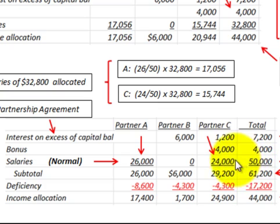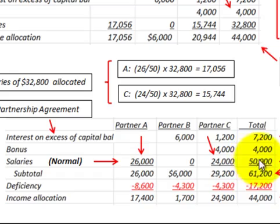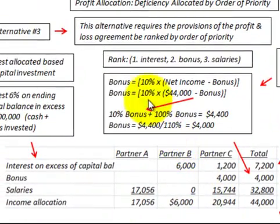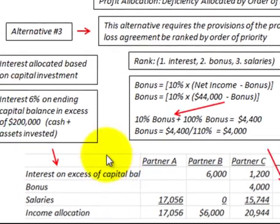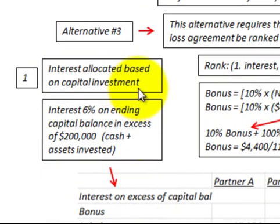We need to adjust the salaries based on this priority ranking, since we can pay off the interest in full and the bonus in full, but we cannot pay the total salary amount. To recap, the ranking is: interest paid first, bonus second, and salaries third. Now let's look at how we calculate interest on the excess capital balance.